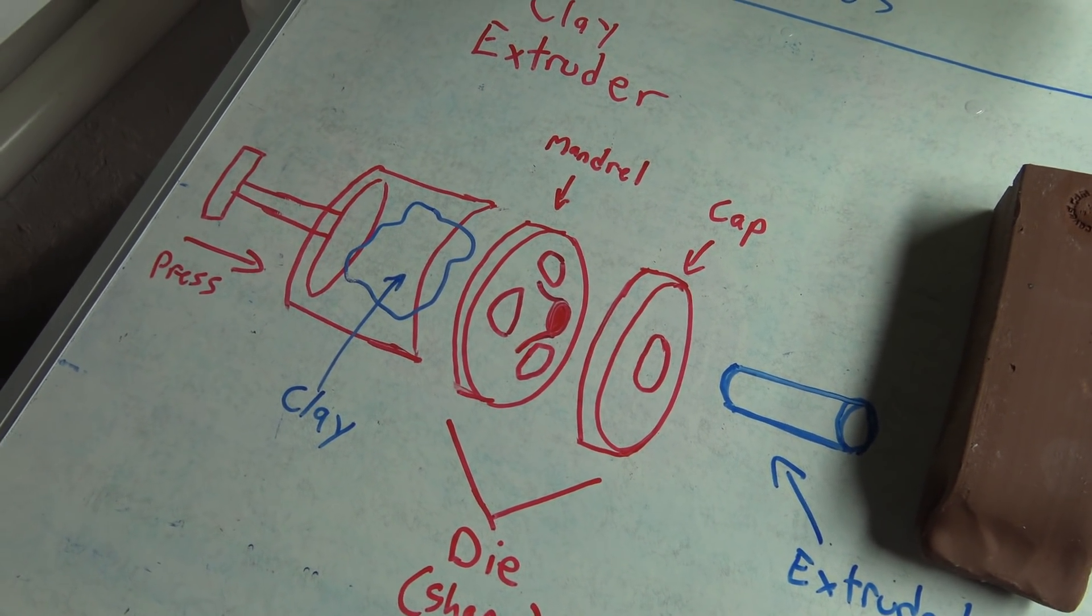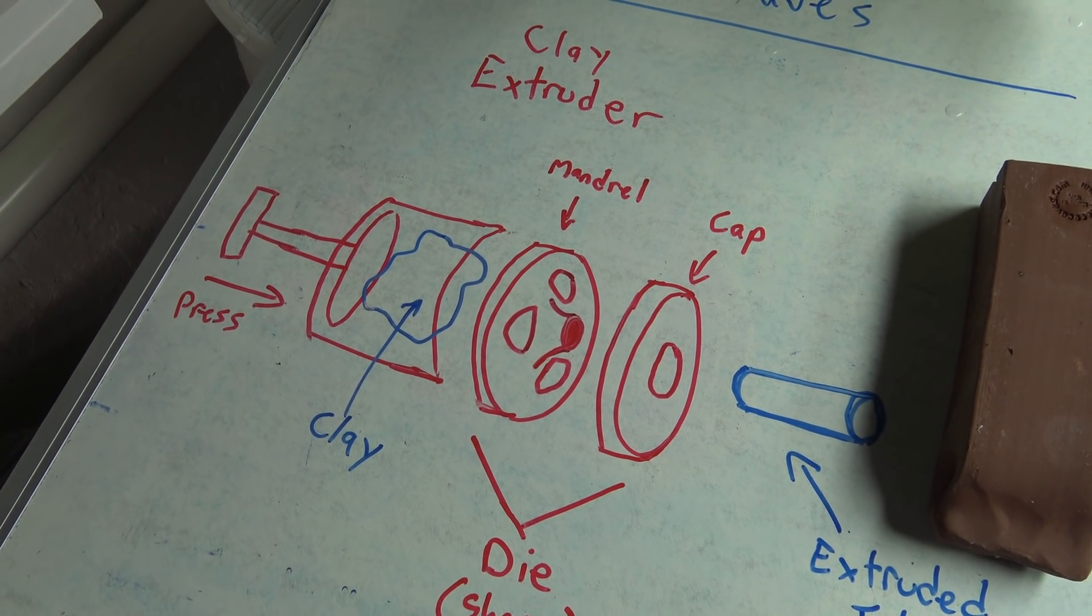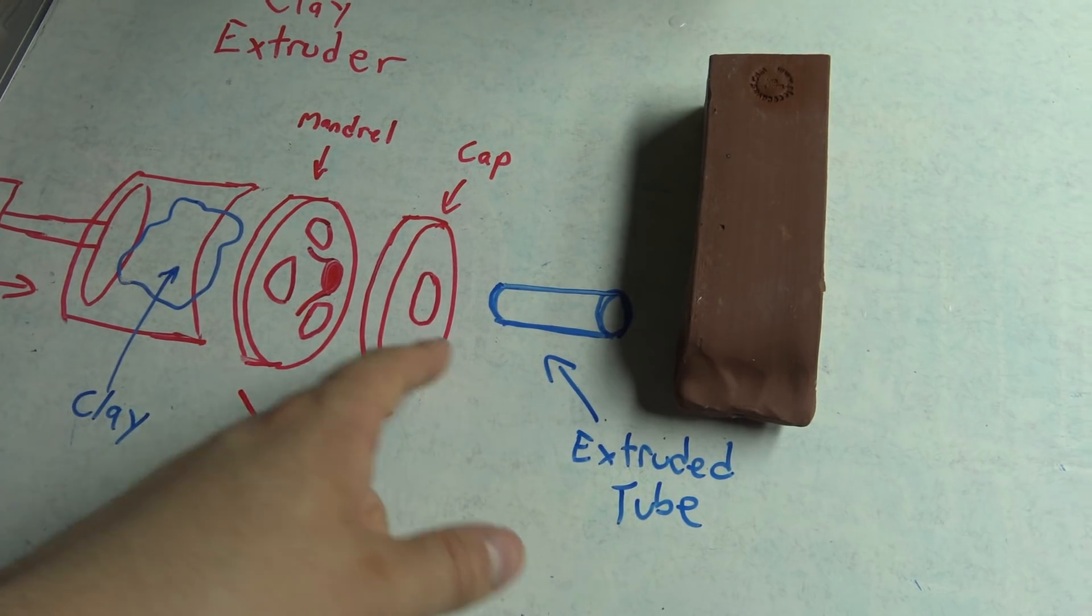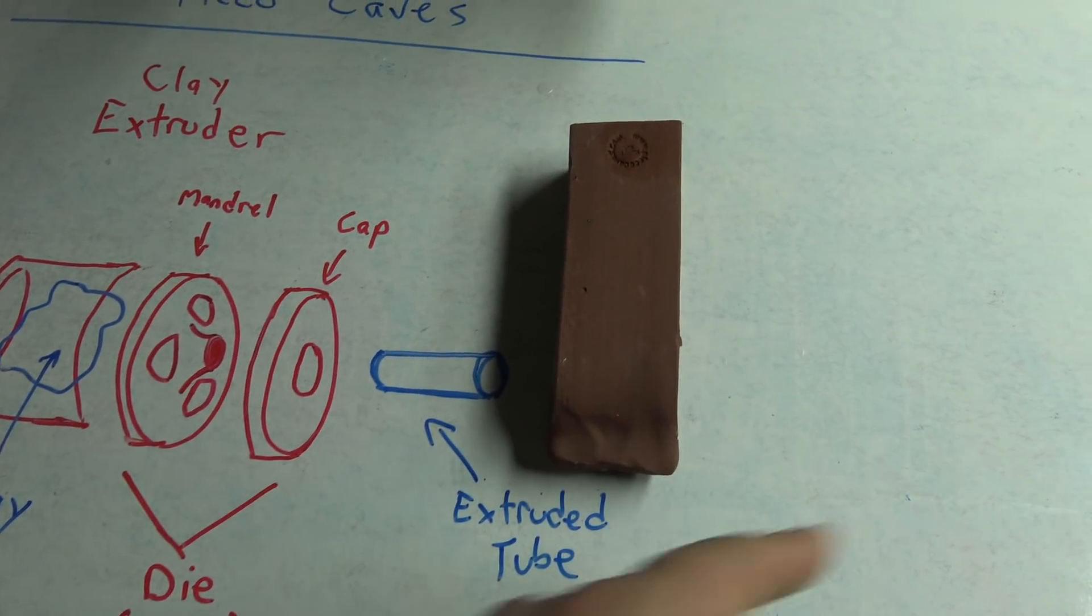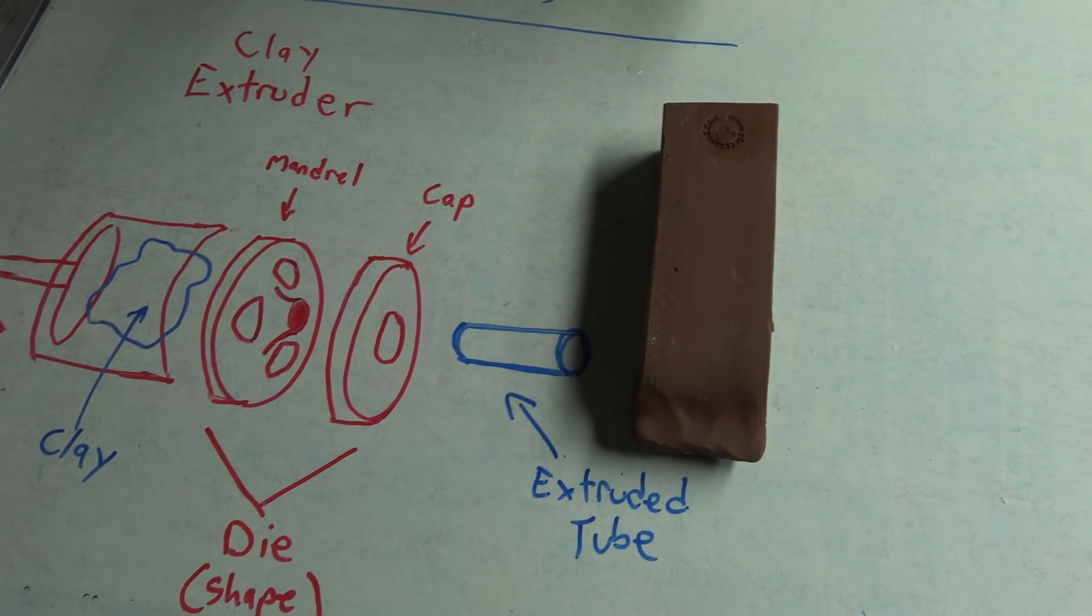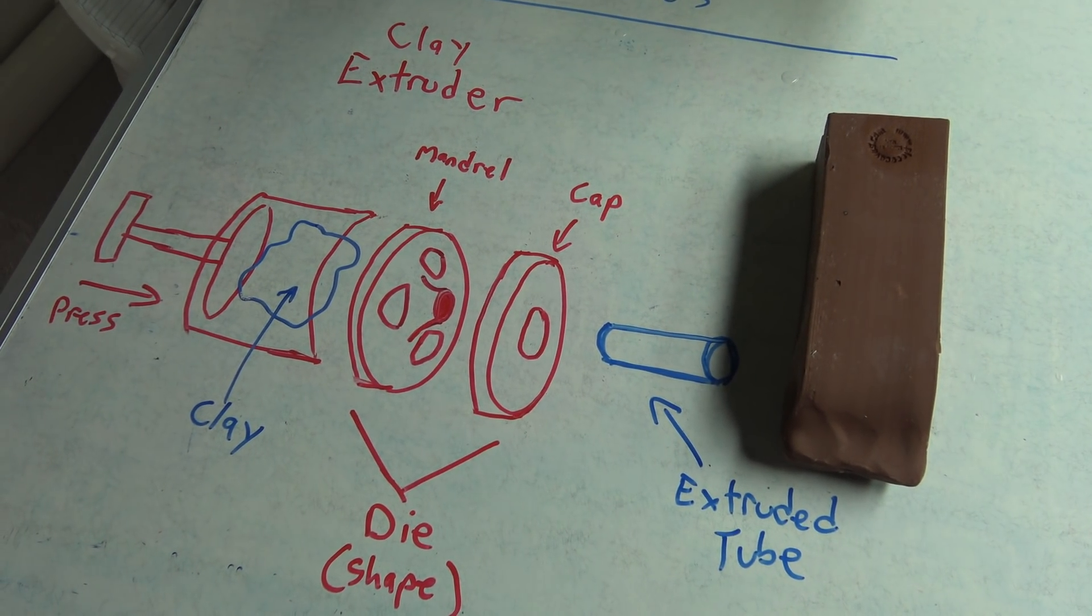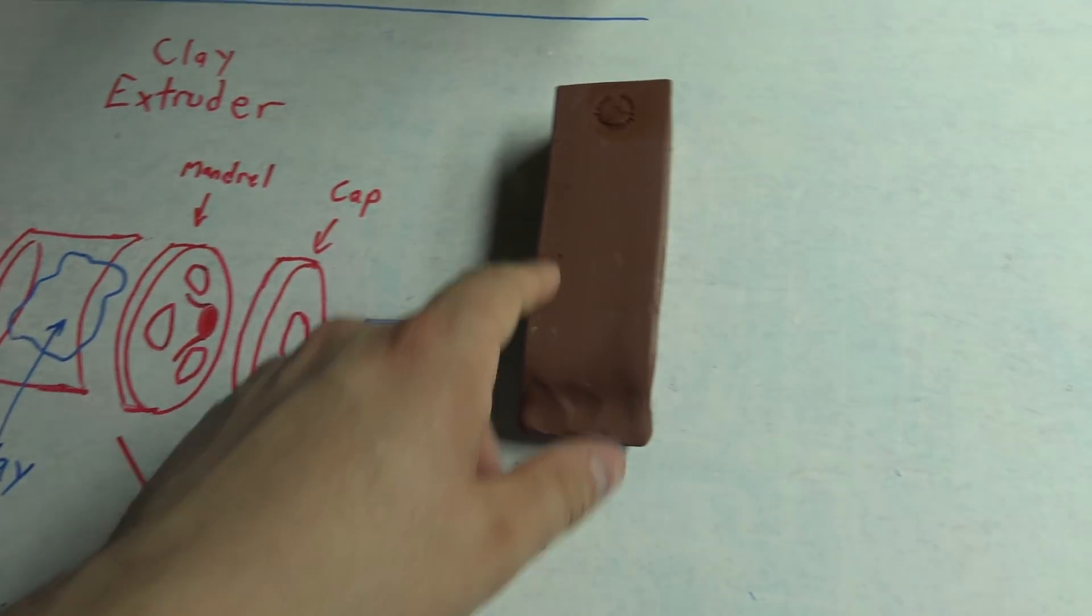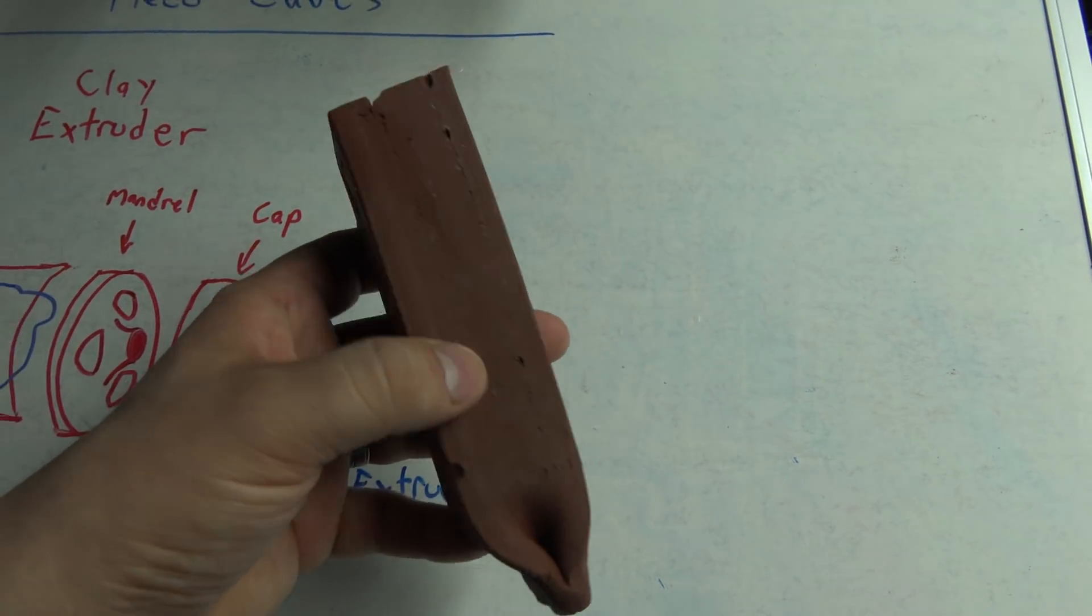There's also mechanical extruders, which will automatically press. And essentially, what you have is once you turn it on, you're just going to get a tube of clay that shoots out the end. And you can chop it to whatever length you want. And it's just going to continue to extrude your clay until you run out. And that's most likely how this was actually constructed.